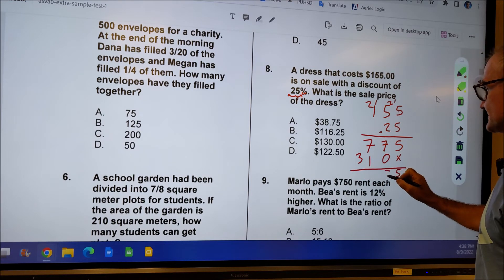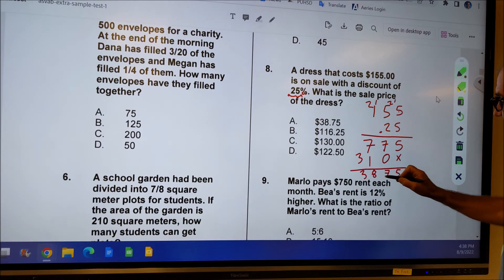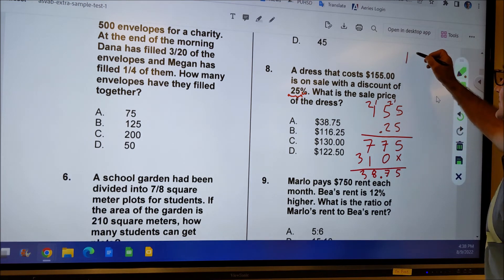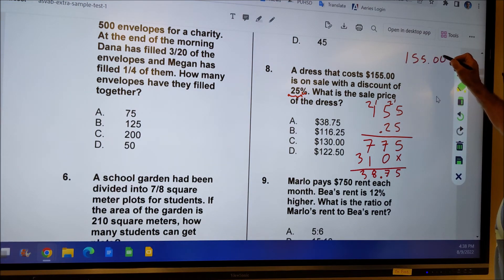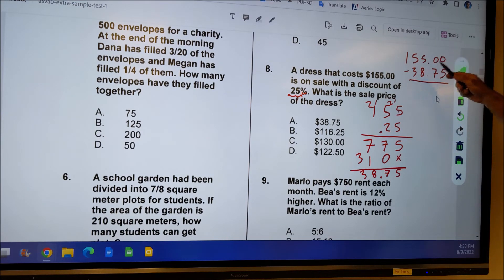So I have to do the 155.00 minus a discount of $38.75. I could just do 155 minus $39. If I could do that in my head, I think that'll be $116. And then I got to remember that extra quarter. But the only thing that's close to $155 minus $39 is $116.